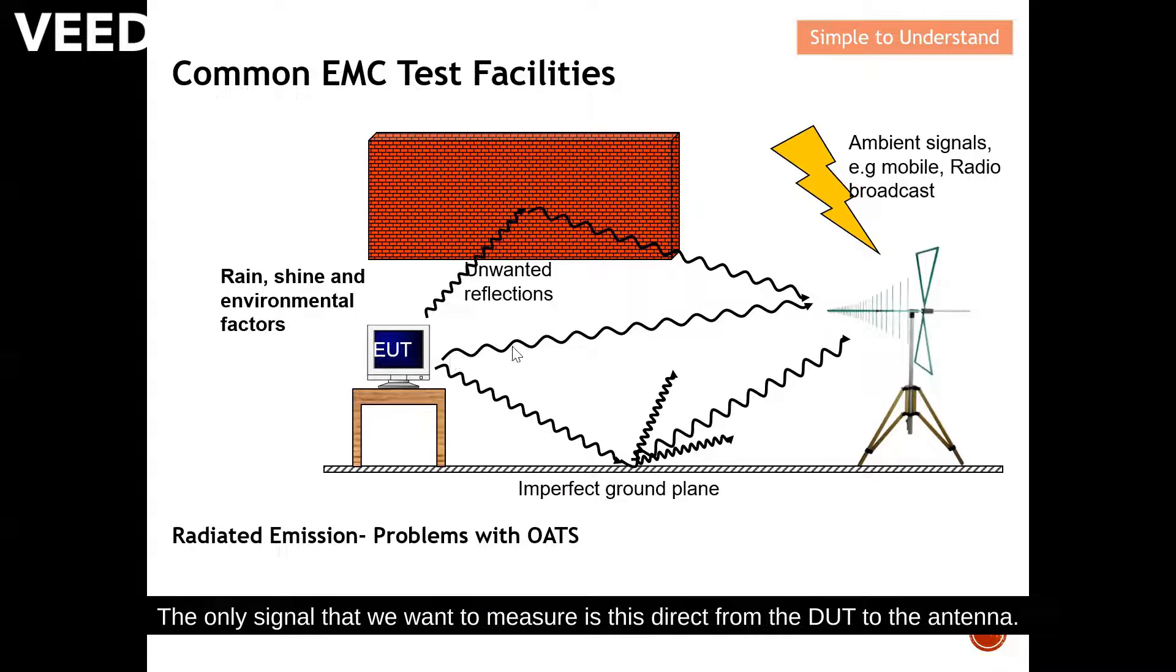We also have interference from external ambient signals, for example the mobile radio broadcast, etc. This is one of the key problems that we have when we actually have an open area test site. So the solution is to use the chamber.